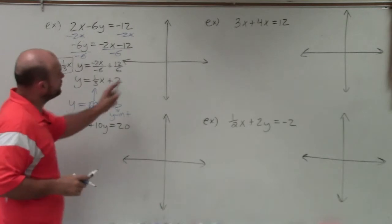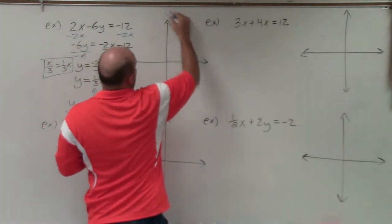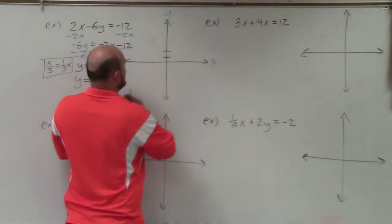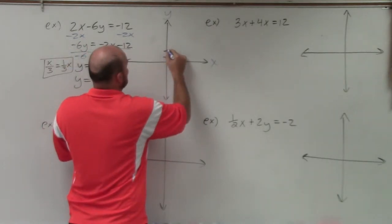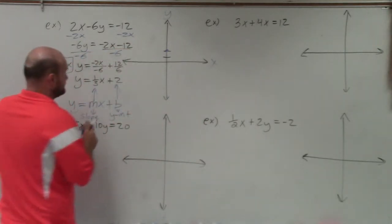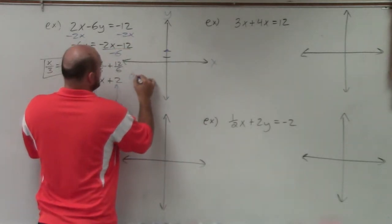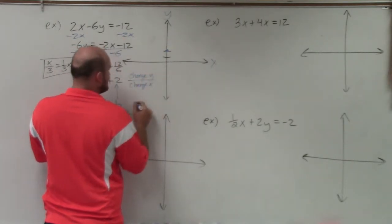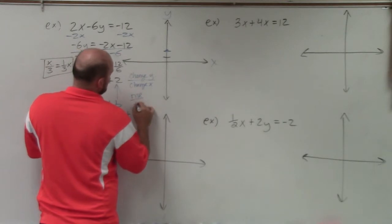Remember, y-intercept is going to be where your graph crosses the y-axis. So I go to the point 2 on my y-axis, positive 2, 1, 2, and I make a nice big dot. Now remember, slope is going to be a ratio. Slope is the change in y over the change in x, otherwise also known as rise over run.